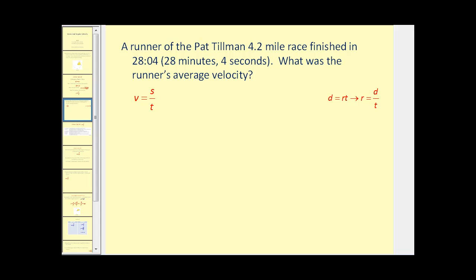Let's take a look at a traditional question first. A runner of the Pat Tillman 4.2 mile race finished in 28 minutes 4 seconds. What was the runner's average velocity? We'll take the distance and divide by the time. This is an example of linear velocity.